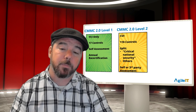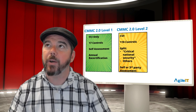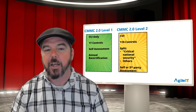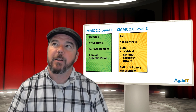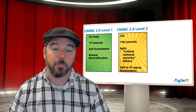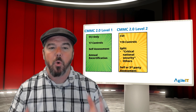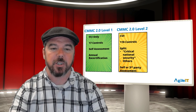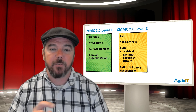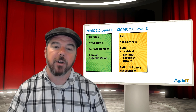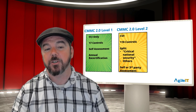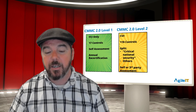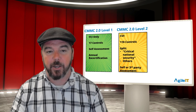CMMC level two is probably going to be the most important for our audience. It has all 110 controls of NIST 800-171, but it's split — and this is where the questions lie. It's split between organizations that handle critical national security information and others. It remains to be seen what qualifies as critical national security information, and that guidance will probably come with DOD documentation on CMMC 2.0. If you do have critical national security information, you will be required to have a third-party assessment every three years. If you fall into the other category, that can be a self-assessment completed every year — the annual recertification.